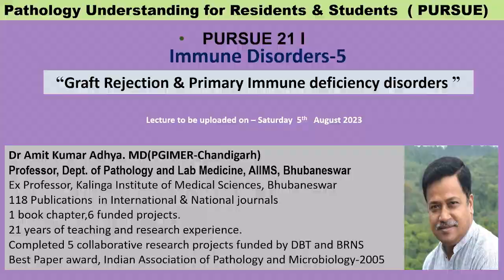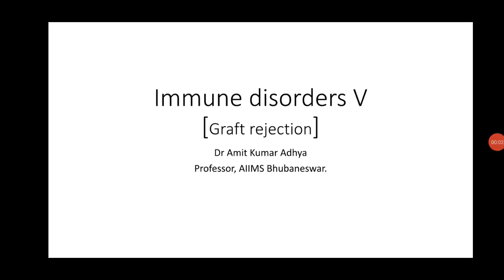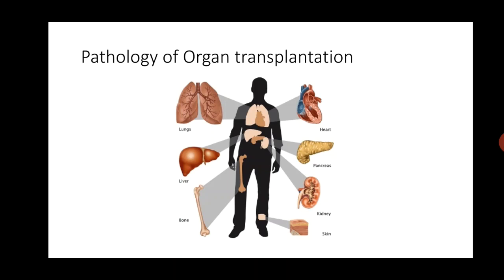Hello students, welcome to the lecture on immune disorders. In this lecture I shall talk on graft rejection. Many organs can be transplanted from one person to another — they include the lungs, heart, liver, kidney, pancreas, bone, skin, and cornea. The biggest hurdle in transplantation is graft rejection. Kidney being the most common organ to be transplanted, our further discussion will be focused on renal allograft rejection, but the general principles will apply to most other organs as well.